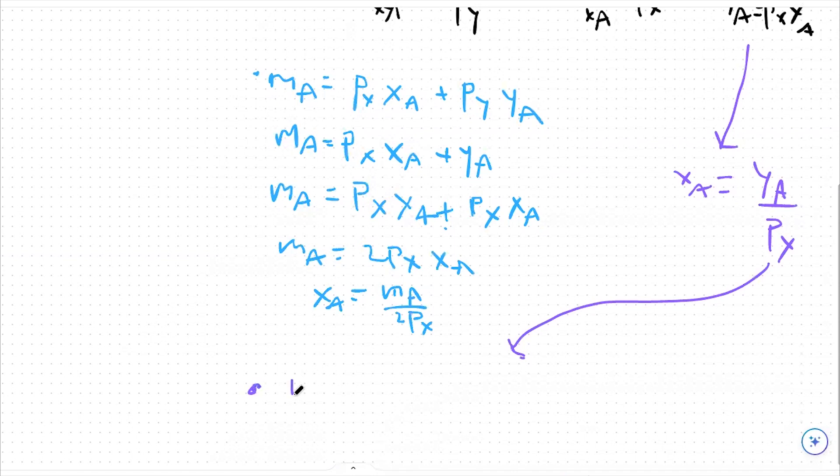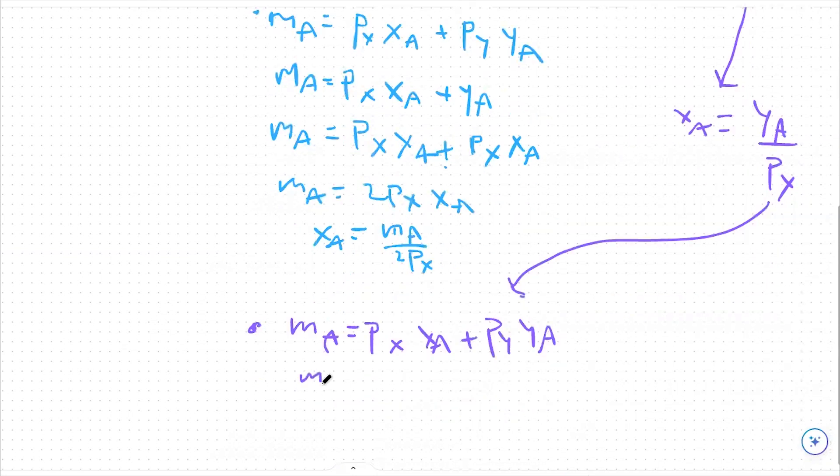So I'm going to go back to my income and say MA again is equal to px xA plus py yA. But this time, I'm going to plug in for xA this yA over px.